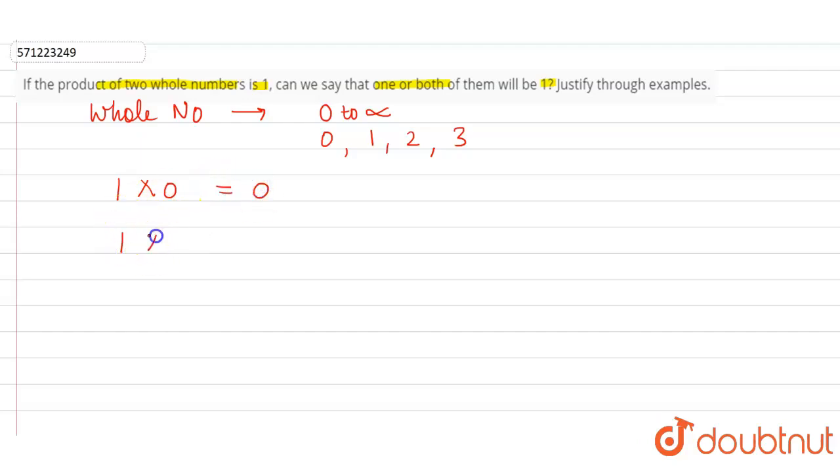Now one times one. Here both whole numbers are one, so one times one is one. One times two is two. If we observe from these three examples, we can say that...